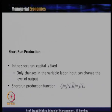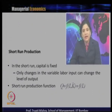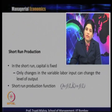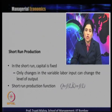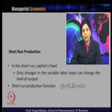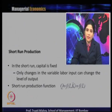In the short run, capital is considered fixed and only changes in the variable labour input can change the level of output. The short run empirical production function is therefore q = f(L), with capital remaining fixed. Whenever there is a need to change q in the short run, it is achieved only through changes in labour.